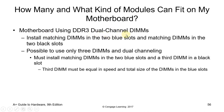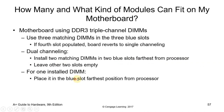For a motherboard using DDR3 dual channel DIMMs: install matching DIMMs in the two blue slots and matching DIMMs in the two black slots. It is also possible to use three DIMMs in dual channeling — install matching DIMMs in the two blue slots and a third DIMM in a black slot. For DDR3 triple channel, use three matching DIMMs in the three blue slots — if the fourth slot is populated, the board reverts to single channel. You want to avoid going back to single channeling.